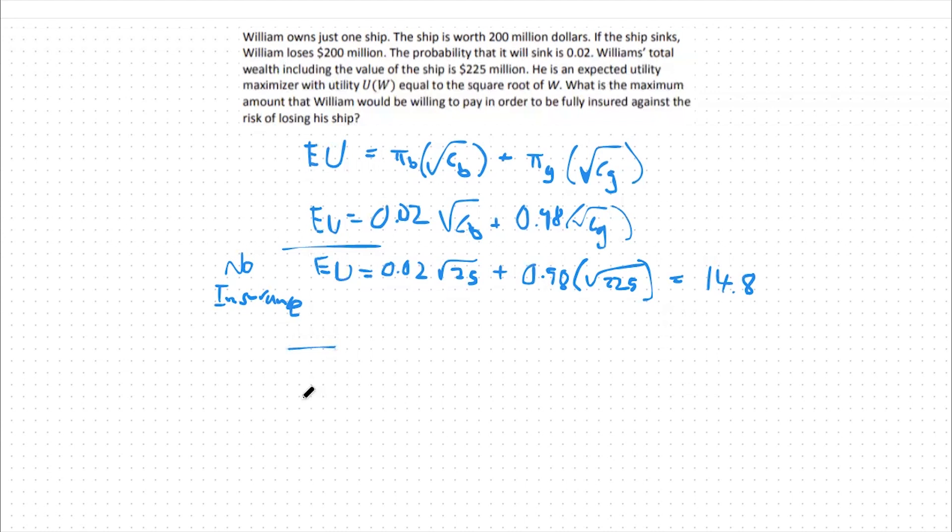Let's now compare this to my full insurance case. Here we'll say 14.8, or my expected utility in the bad state, or rather in the state of the world where I do not purchase any insurance, is equal to 0.02 times some variable x, square root of that variable, plus 0.98 times the square root of some variable x.